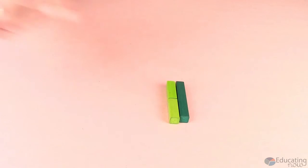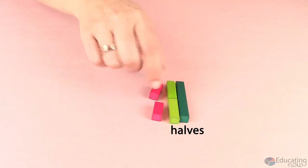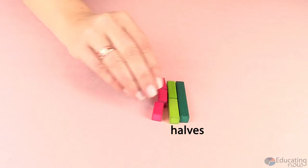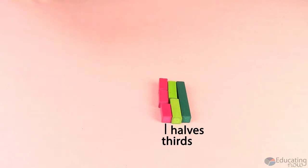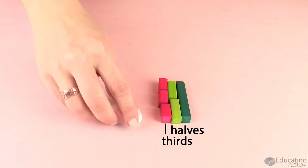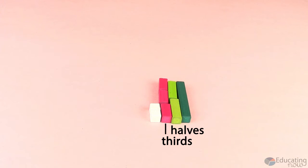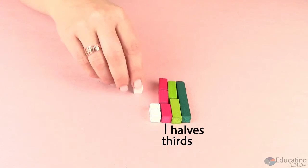Light greens would be equal to one half. We can use our red pieces again, but this time they are thirds.